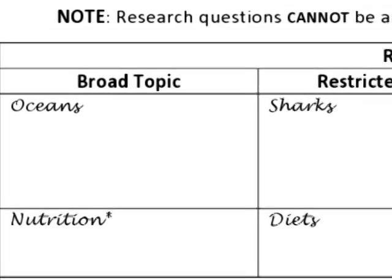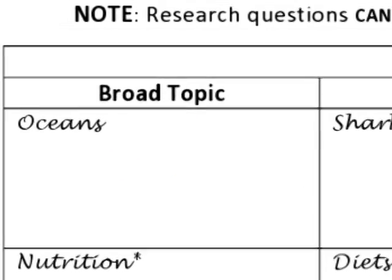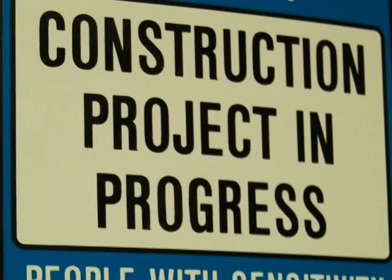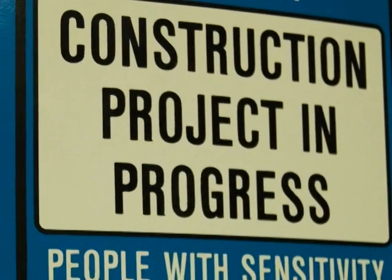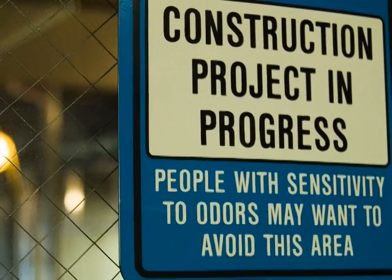In the first column, simply write a topic that you want to research. Make sure that it is something you are naturally interested in, or something that is important to your major, future career, or current course assignment. That will help you stay motivated as you work on the paper, which is important because if you are not interested, your writing will be uninteresting.